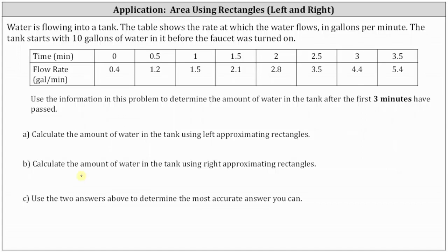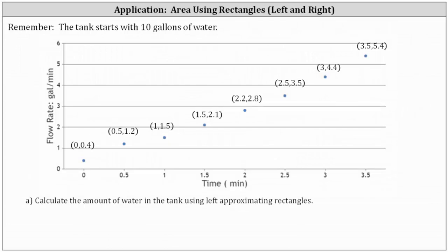The first step is to plot the data in the table as ordered pairs on the coordinate plane, and I've already done this to save time. The first ordered pair of (0, 0.4) indicates that at the time of zero minutes, the flow rate is 0.4 gallons per minute. The second ordered pair indicates at 0.5 minutes, the flow rate is 1.2 gallons per minute, and so on.